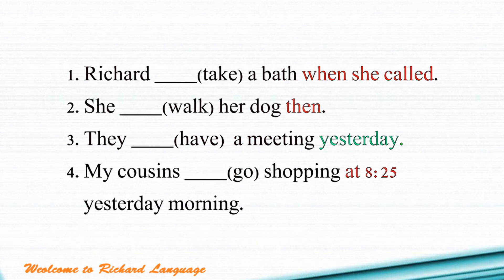So those are the three ways we use past continuous tense. Now let's see some examples. Number one: 'Richard ___ a bath when she caught.' Here, 'when she caught' is the very short action in the past, so the answer for number one should be: 'Richard was taking a bath when she caught.'